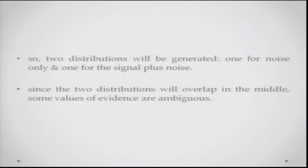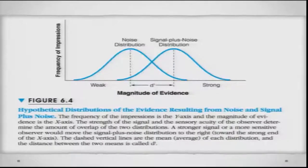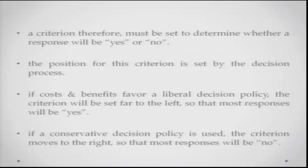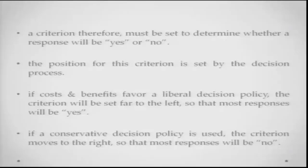You will have two distributions: one will be the noise distribution, the other will be the signal-plus-noise distribution. Since these two distributions will overlap somewhere in the middle, some values of evidence will be slightly ambiguous — you are not really sure whether there was only noise or whether there was a signal in the noise as well. The distance between the means of these two distributions is called D-prime, which is basically your sensitivity. To decide whether a signal was present or not, you need to set some criterion: beyond this point I will say yes the signal was present, before this point I will say no the signal is not present.